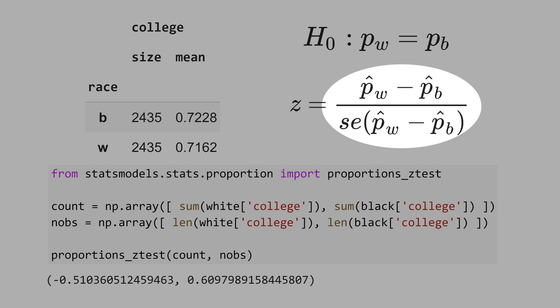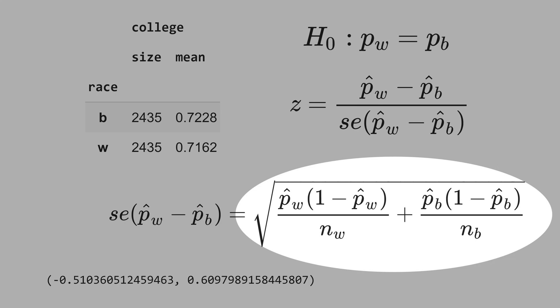If you want to do this computation manually, the p-hat w is the proportion of white people with a college degree, it's here, and the p-hat b is the proportion of black people with a college degree, that's here. And to calculate the standard error, you have to use this formula here.